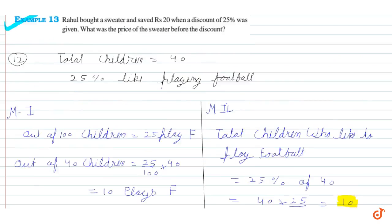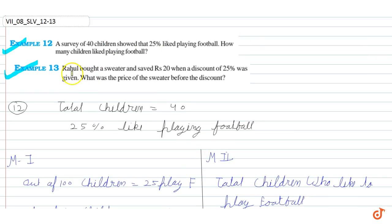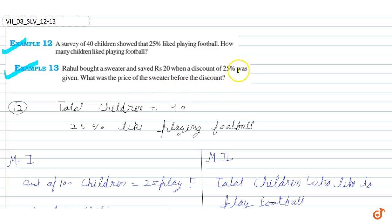Now we will solve question number 13. Rahul bought a sweater that saved Rs.20 when a discount of 25% was given. So what was the actual price of that sweater before the discount? This means that a 25% discount equals a saving of Rs.20.